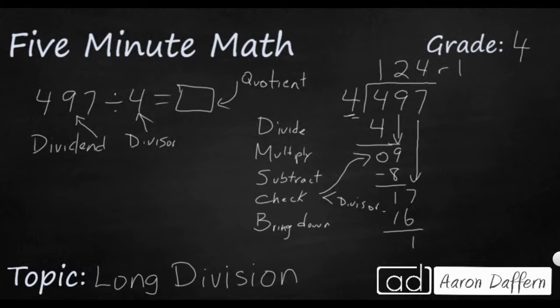Another way to write this, and this is what you're going to start doing in fifth grade and sixth grade, is you're not really going to write it with a remainder, though it's fine for fourth grade. You're going to write the leftover as part of a mixed number. So you've got your one leftover, and your divisor becomes your denominator. So you could say 124 remainder one. You can also say 124 and one-fourth.